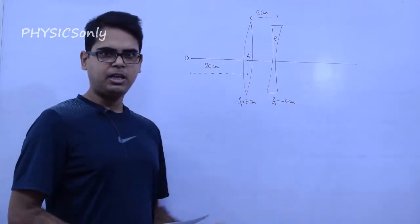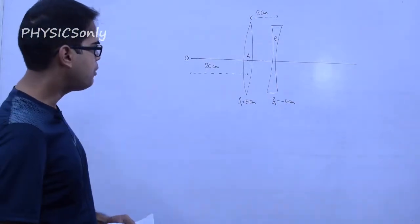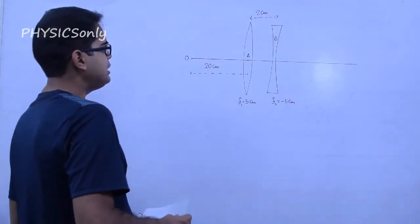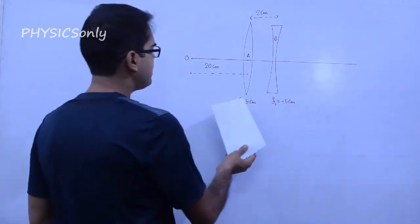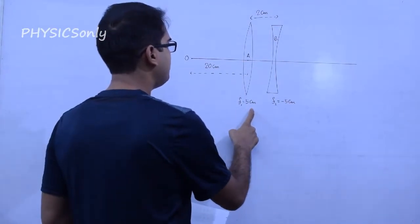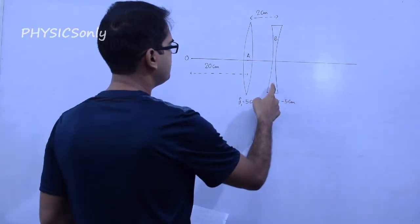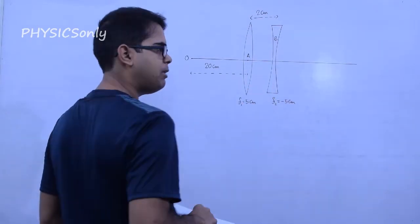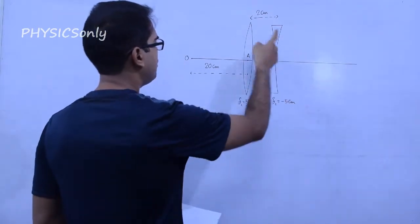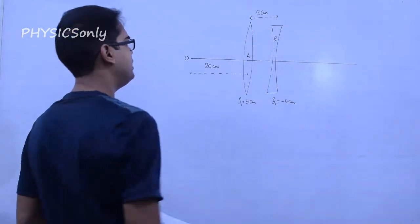What is the problem? The problem is that the convex lens has focal length 5 cm and the concave lens has focal length minus 5 cm, and the gap between them is 2 cm.